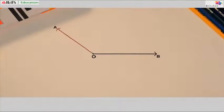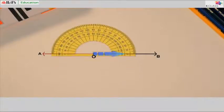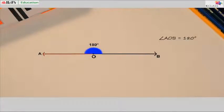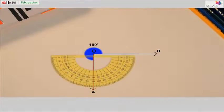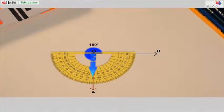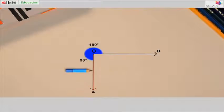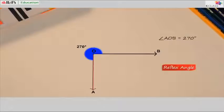Now see this. Ray OA falls on a straight line with OB. The protractor shows 180 degrees. An angle measuring 180 degrees is a straight angle. Next, the protractor shows that angle AOB is 270 degrees — that's more than 180 but less than 360 degrees. That's what we call a reflex angle: more than 180 but less than 360 degrees.